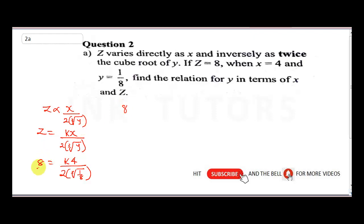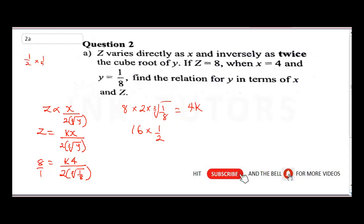We cross-multiply since 8 is over 1, giving us: 8 × 2 × ∛(1/8) = 4k. That's 16 × ∛(1/8). The cube root of 1/8 is 1/2, because (1/2)³ = 1/8. So we get 16 × (1/2) = 8, which equals 4k.